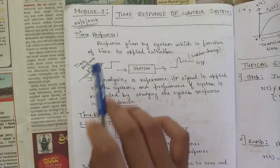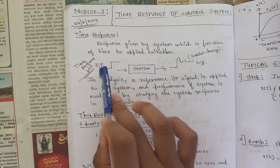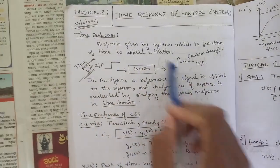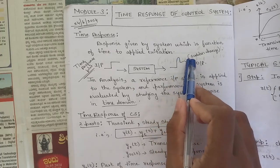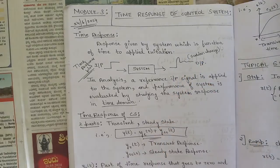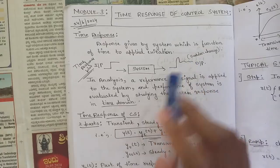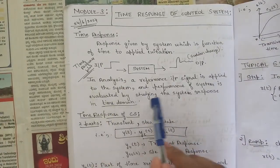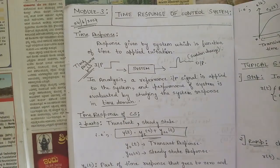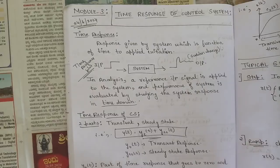So what is time response? It is the response given by the system, which is a function of time, to the applied excitation. Consider a control system having an input and output where we get a constant output, and after some time there is a sudden change. In analysis, a reference input signal is applied to the system and the performance is evaluated by studying the system response in the time domain — how much time it takes to settle or produce a sudden change in the output.